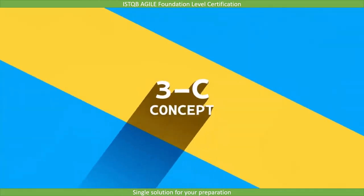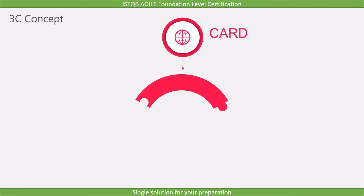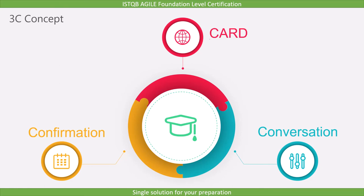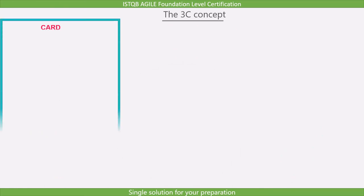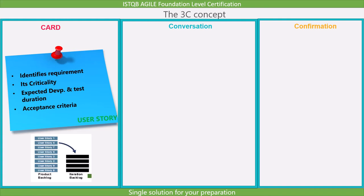The last topic of this lecture is the 3C concept. According to the 3C concept, a user story is the conjunction of three elements: card, conversation, and confirmation. The card is the physical media describing a user story. It identifies the requirement, its criticality, expected development and test duration, and the acceptance criteria for that story. The description has to be accurate as it will be used in the product backlog.